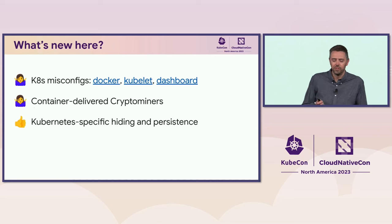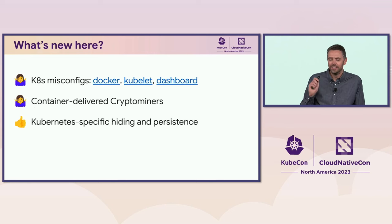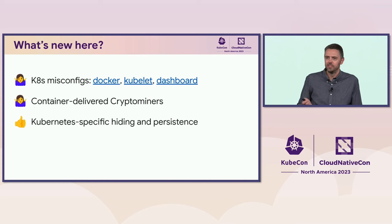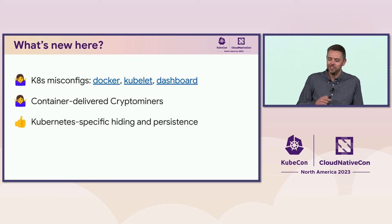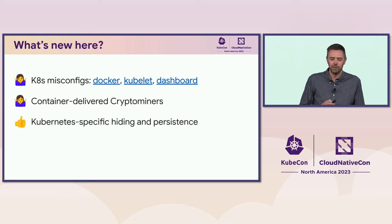I thought it might be interesting to cover what's actually new here. We've had Kubernetes misconfigurations before — Docker ports exposed to the internet, Kubelet ports on the internet, Kubernetes dashboards exposed to the internet, and scanners targeting all those things. Container-delivered crypto miners have also been around for quite a while. The new and interesting thing here is some Kubernetes-specific hiding techniques that the attacker used and the way they persisted.